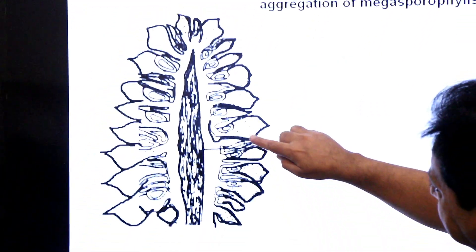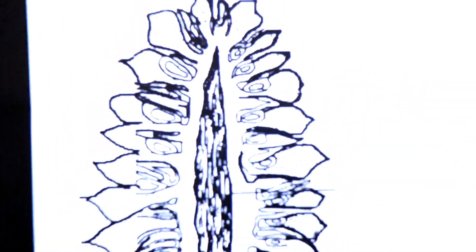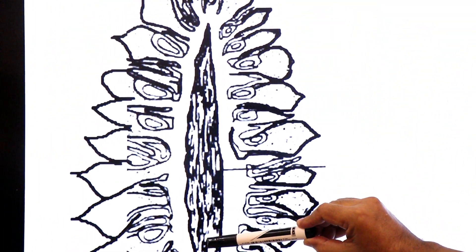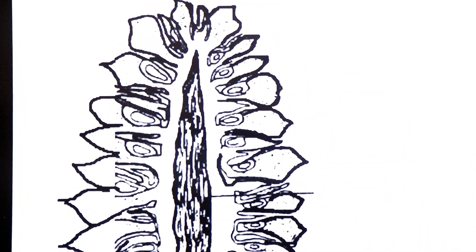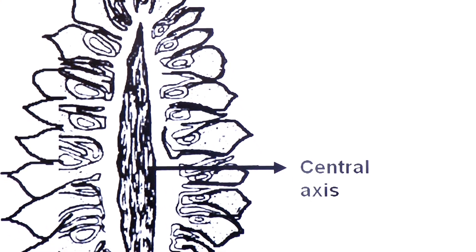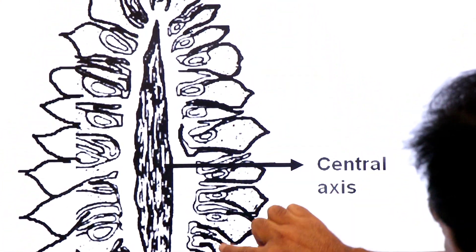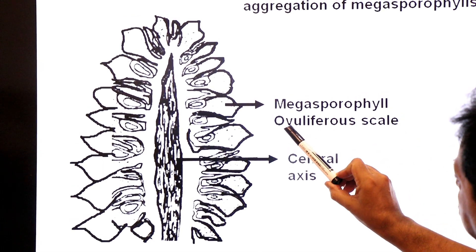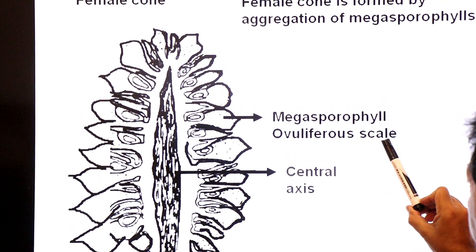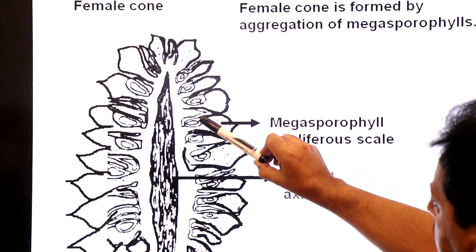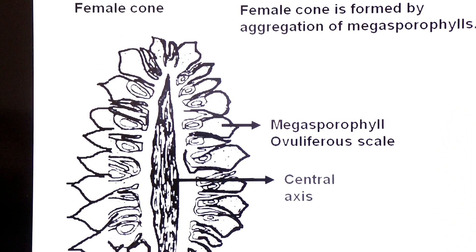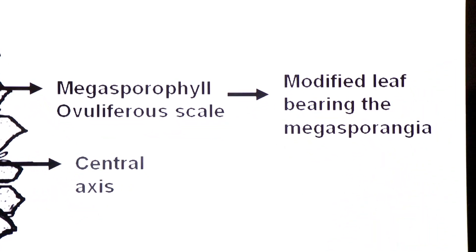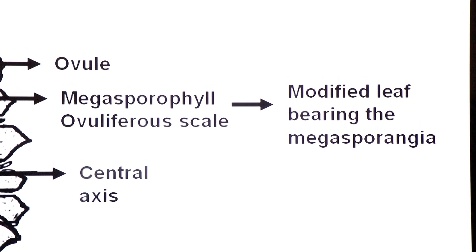This diagram shows the longitudinal section of the female cone. Here you see the central axis, and around it are modified leaves called megasporophylls. The female cone is an aggregation of megasporophylls, which are also called ovuliferous scales — meaning ovule-producing scales. Each megasporophyll bears ovules, and the ovule contains the megasporangium.